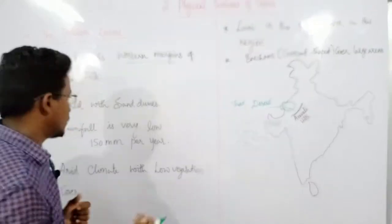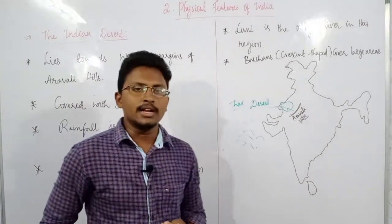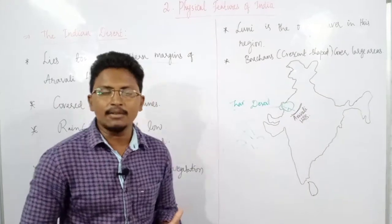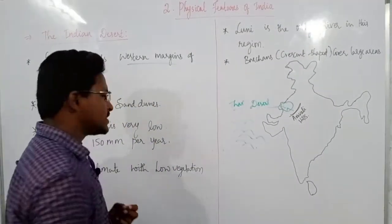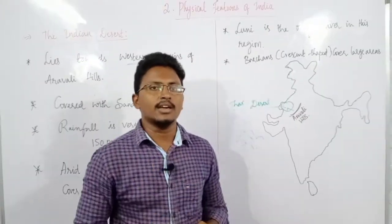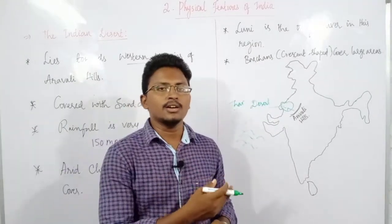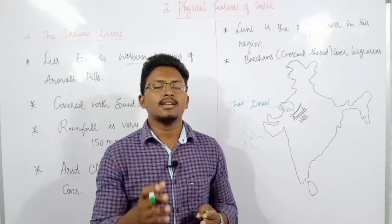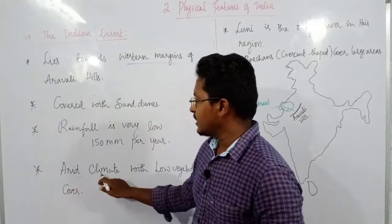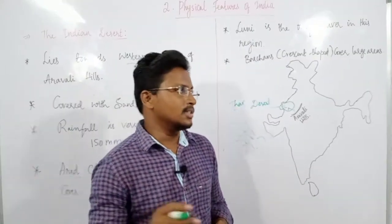Because of this less rainfall, the climate experienced here is arid climate. Arid climate means dry climate, and if there is a dry climate, automatically there will be low vegetation cover. Low vegetation means you can see very rare numbers of plants and trees in this desert area. If you visit the Indian Desert, you can find fewer and fewer trees and plants in this region, because it has arid or dry climate due to receiving less rainfall.